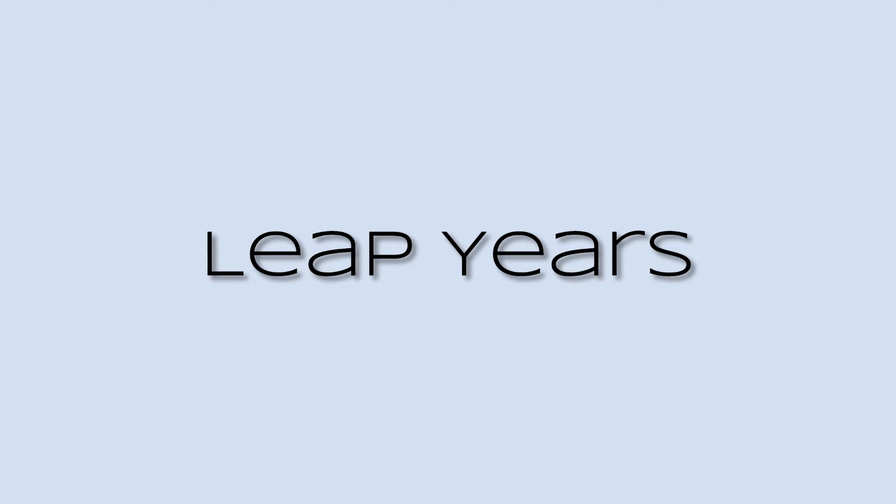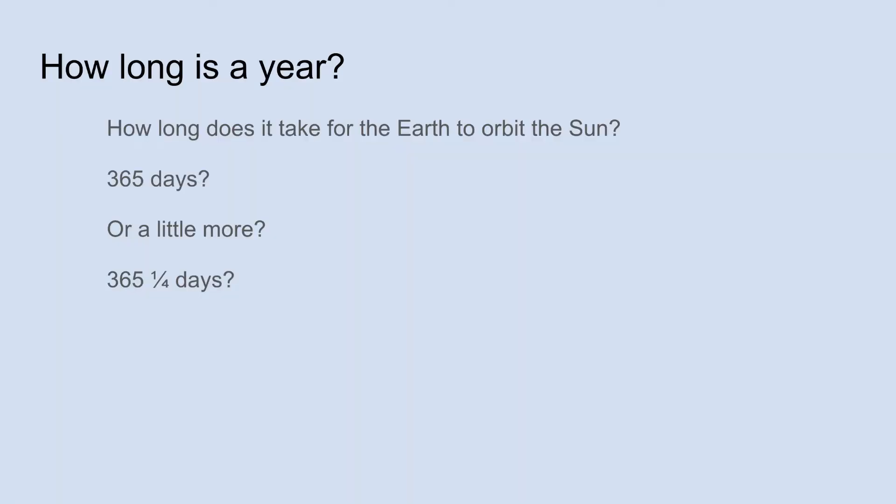Knowing how to figure out when we have leap years is crucial if you want to use the day-of-the-week algorithm that I have linked to at the end of this video. But a bigger question is, why do we even have leap years? Well, it turns out that the question revolves around the time it takes for the Earth to orbit the Sun.